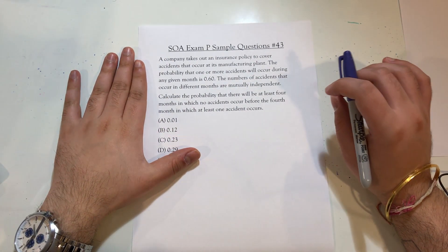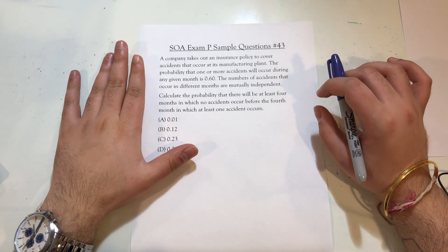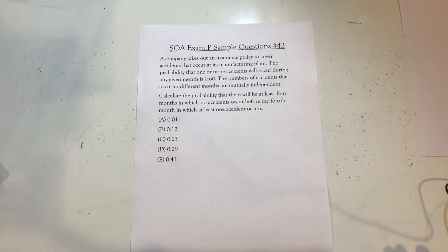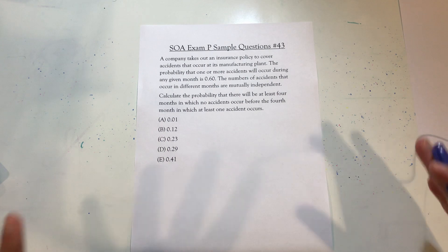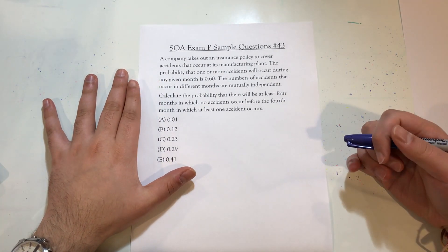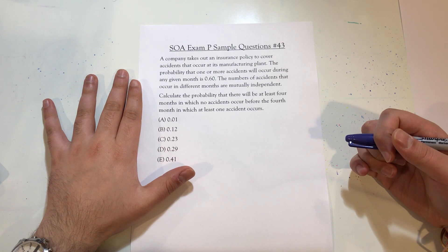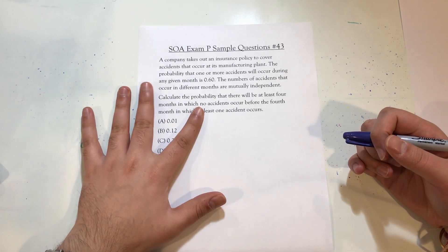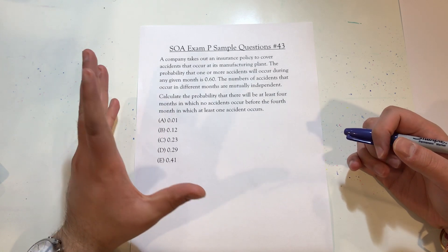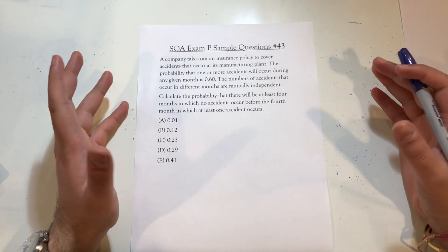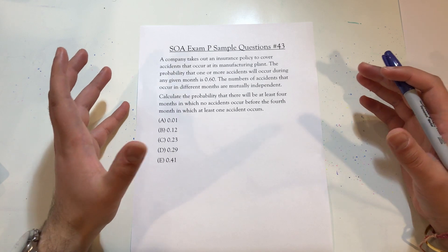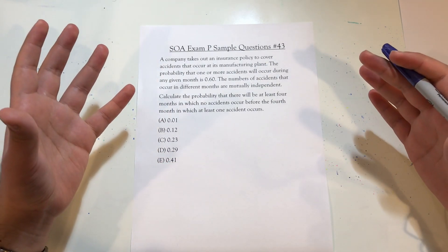I remember this question. This question is confusing — I get it now, obviously, but I think this was the first question I just didn't understand when I was doing these practice problems. The language is a bit confusing, but what this essentially is is an application of something called the negative binomial distribution, which is a more general form of a geometric distribution.